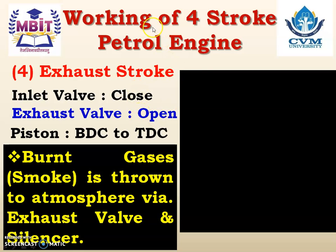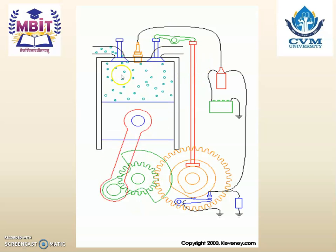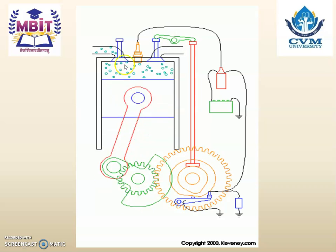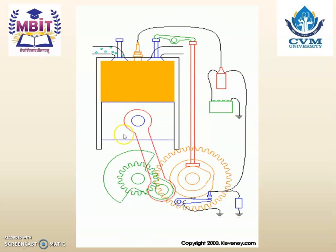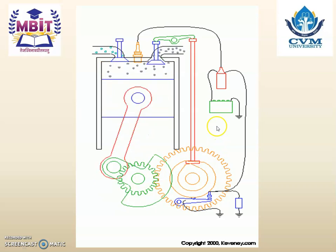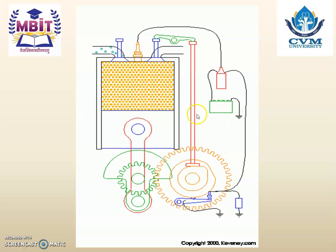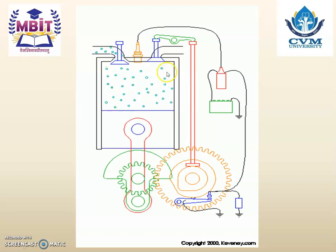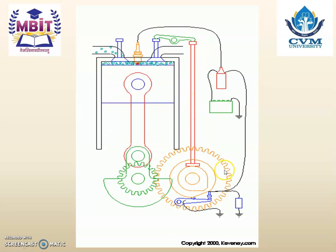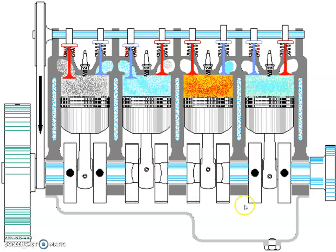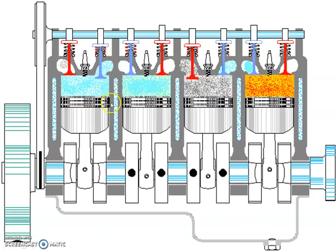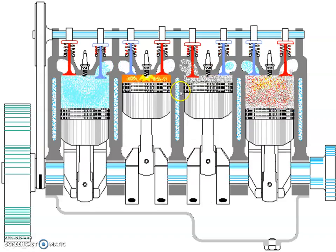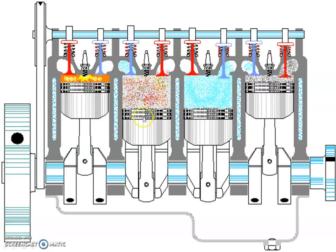That is the working of a four-stroke petrol engine. Let us review it again: suction, compression, expansion, and exhaust. You can also see how the inlet valve and exhaust valve open and close — this is the mechanism to open and close those valves. This video also shows a four-cylinder, four-stroke petrol engine, in which the power stroke takes place one by one in each of the cylinders.